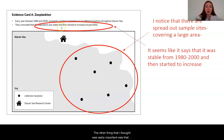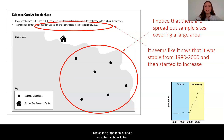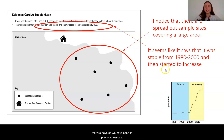The other thing that I thought was really important was that it seems the population was stable and also began to increase around 2000, just like our moon jelly populations. I sketched a graph to think about what this might look like, and to me, this reminded me very much of the moon jelly graphs that we have seen in previous lessons.